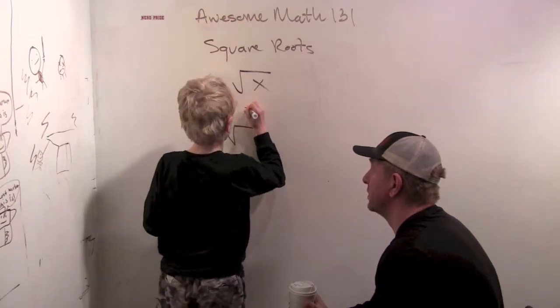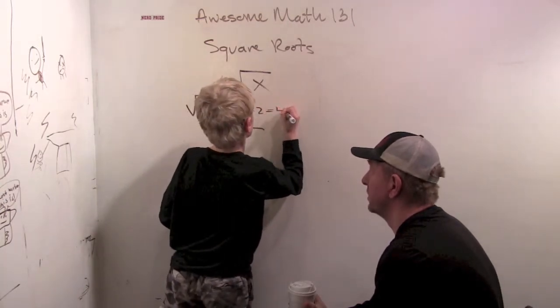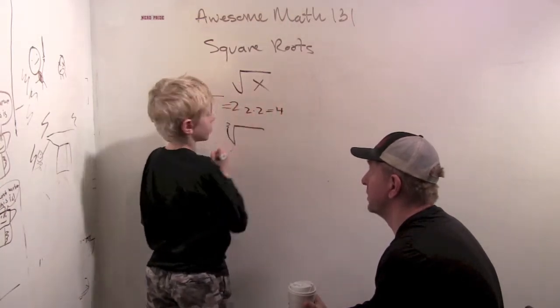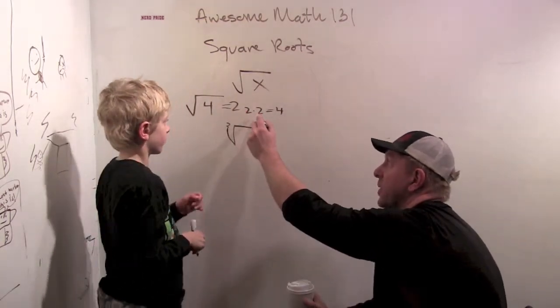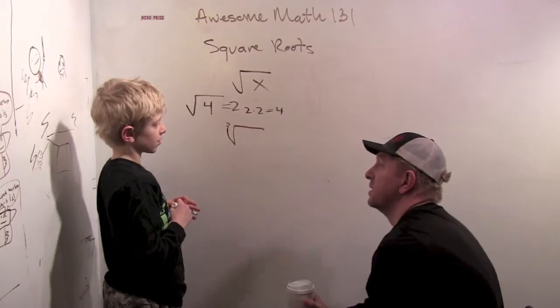So two times two would be four, so square root of four is two. The square root tells you the number you need to square to get to four.